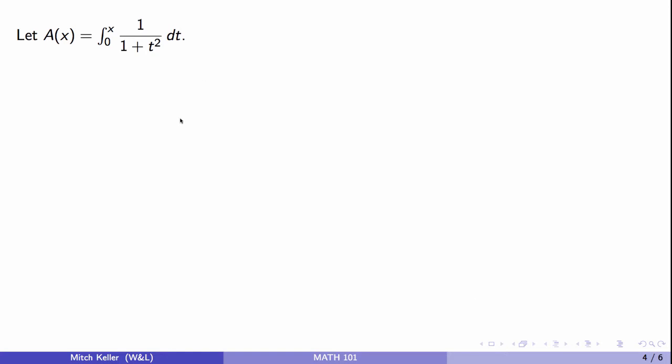So I'm going to take something that looks like this and define a function as the integral from 0 to x of 1 over 1 plus t squared dt. Now, technically, we know an antiderivative for this function. We already saw it back in chapter 2. But let's suppose that we don't algebraically have an antiderivative for 1 over 1 plus t squared, and let's see what we could tell about this function A.